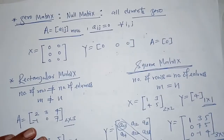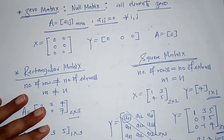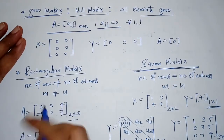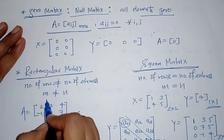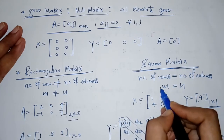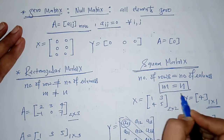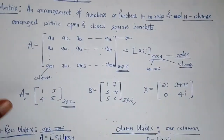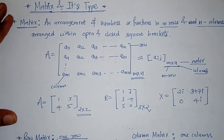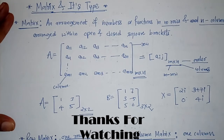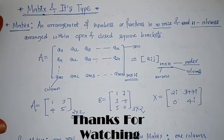So we have seen rectangular matrix and square matrix. The difference is that in a rectangular matrix the number of rows is not equal to the number of columns, while in a square matrix both are equal. So we have seen the matrix and some of its types. Thank you.